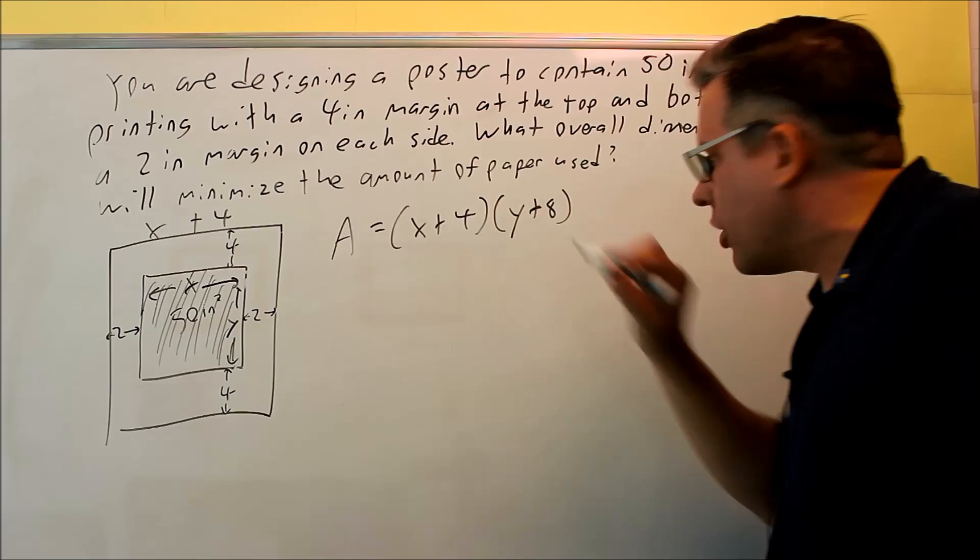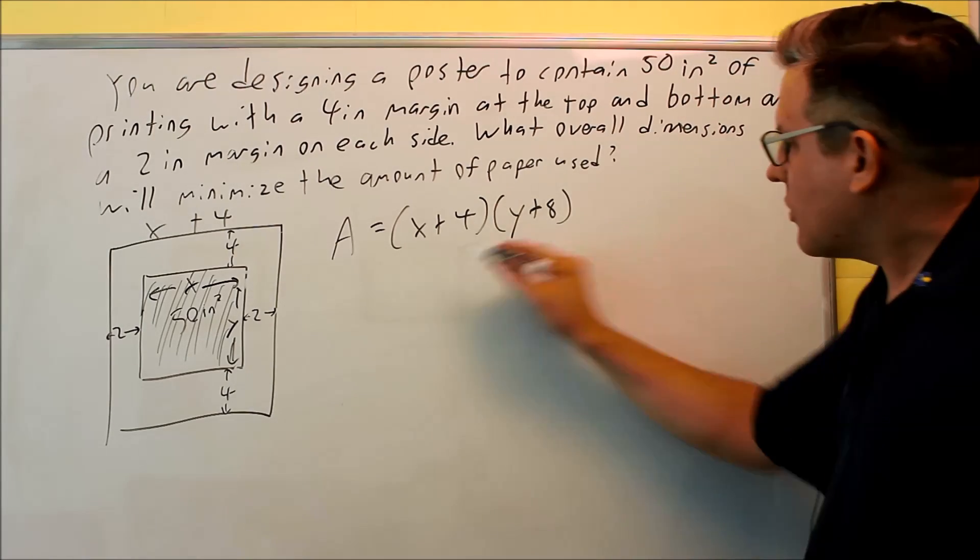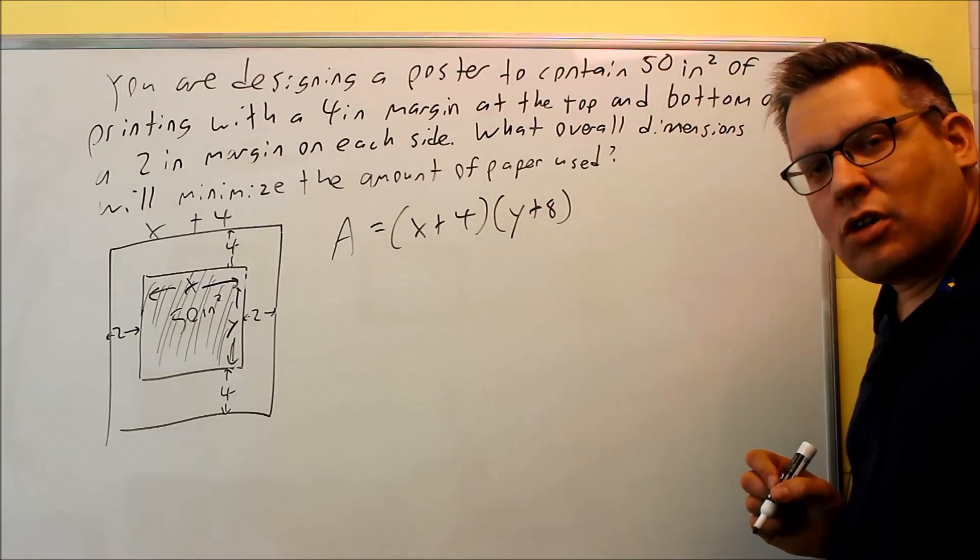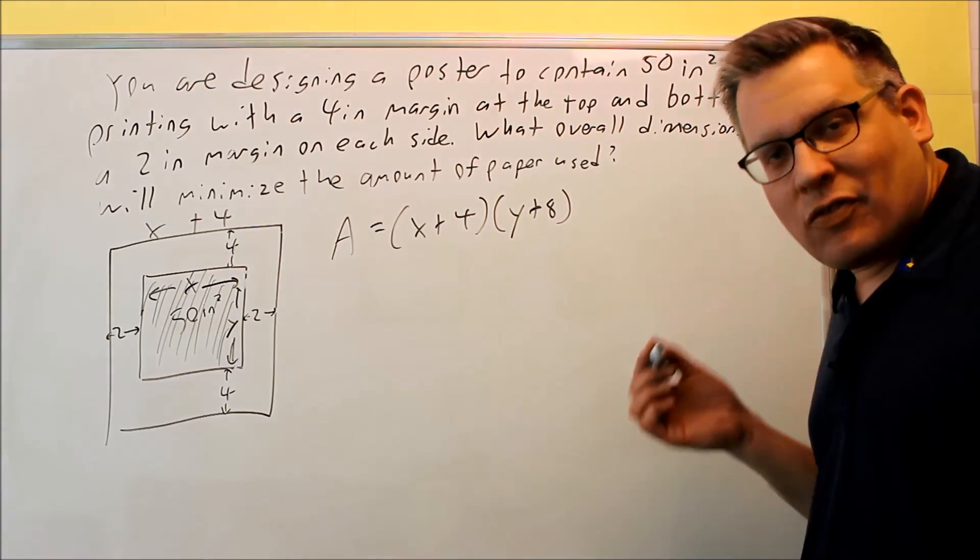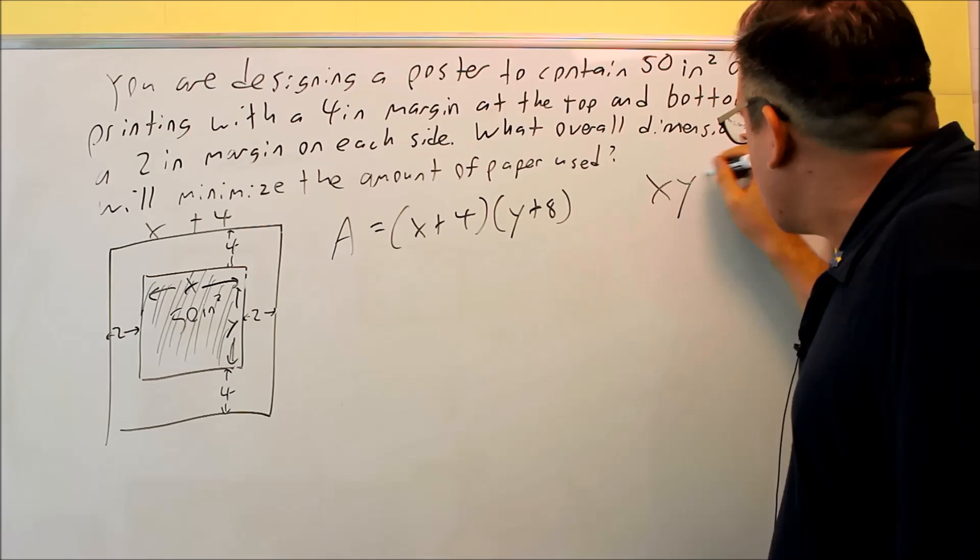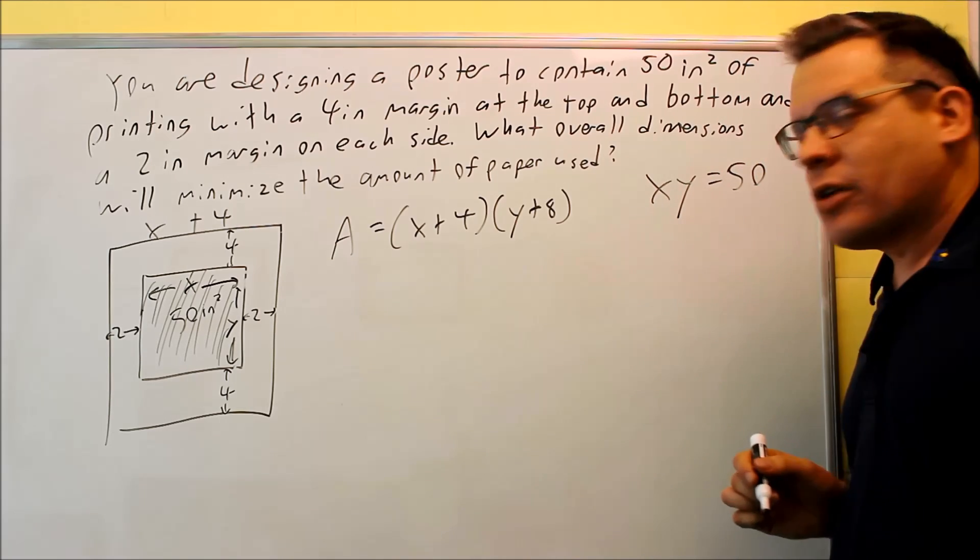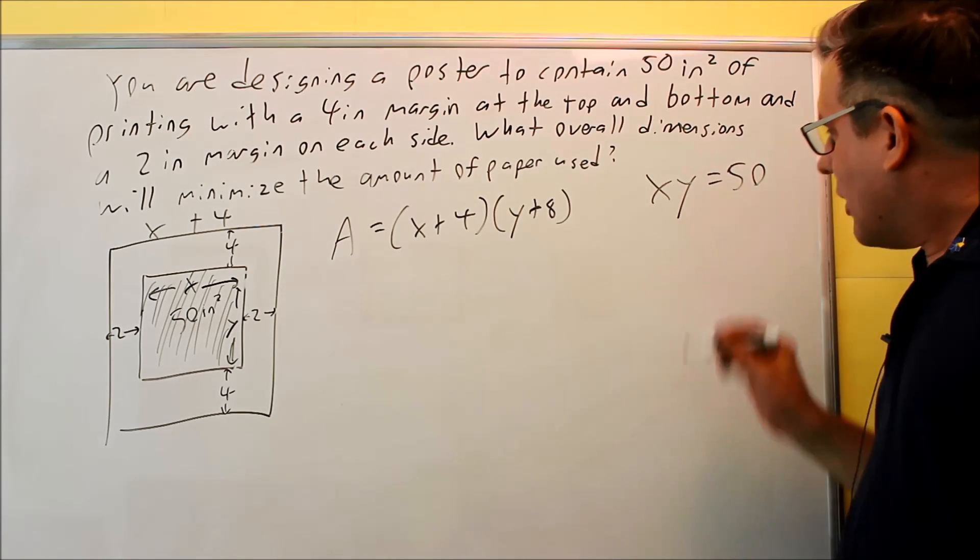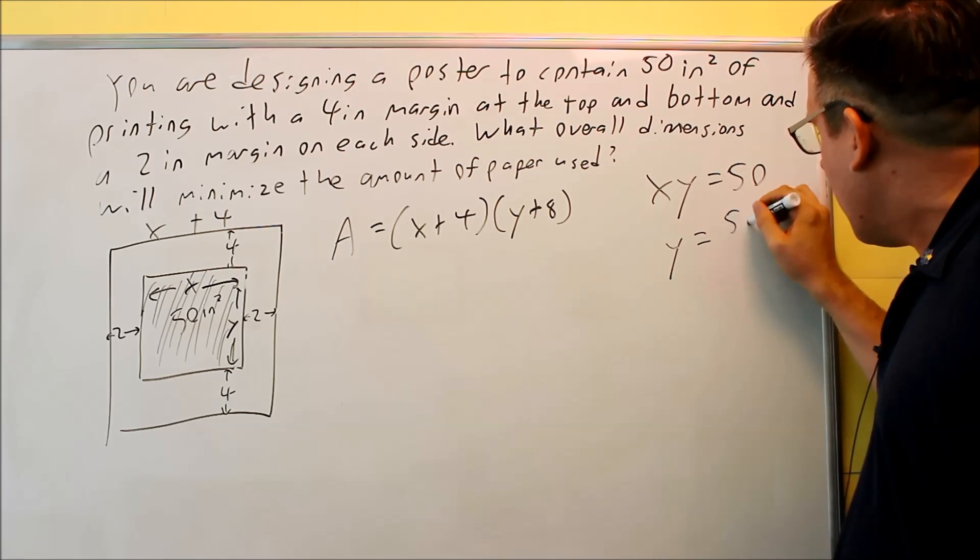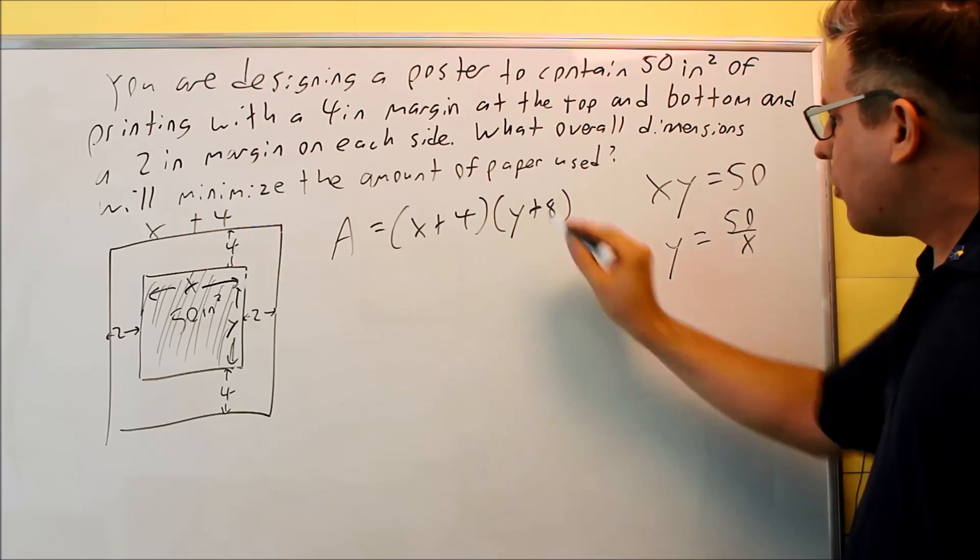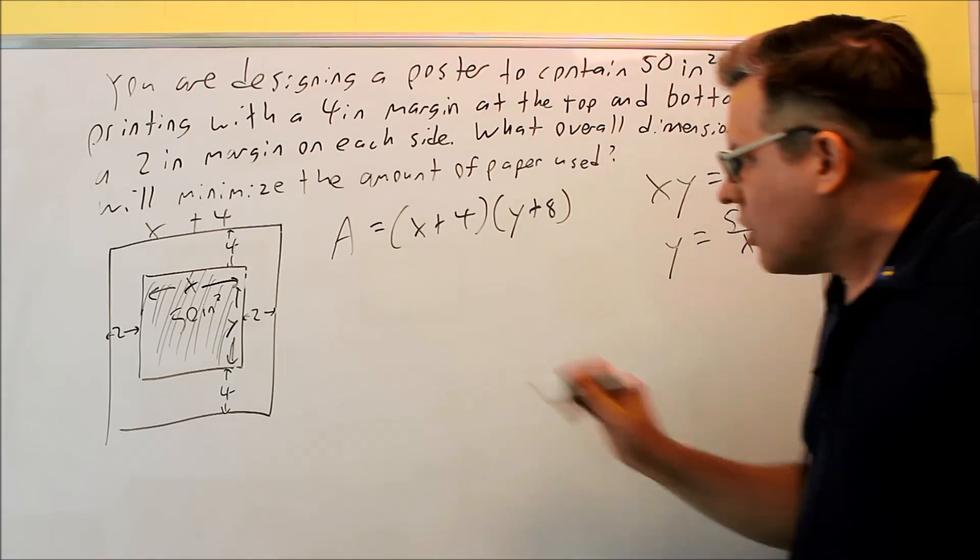However, we don't want this because you don't want to use two different variables. We have to find something else to substitute in there. Now, we are given that the dimension on the inside is 50 square inches. So we can say that x times y is equal to 50. So then I can solve this for your x or y. It doesn't matter. I'll solve for y, and y is equal to 50 divided by x. I can put that directly into this one.